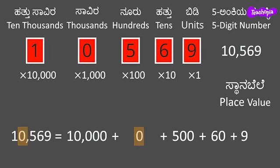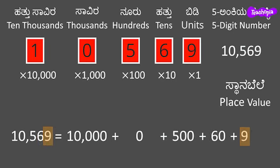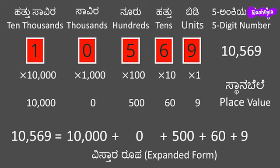The next place is hundreds and the digit is 5, so in the expanded form we have 500. The next place is tens and the digit is 6, so in the expanded form we have 60. The next place is units and the digit is 9, so in the expanded form we have 9. This is the expanded form of the number. The expanded form of the number is the sum of the place values of the digits in the number.